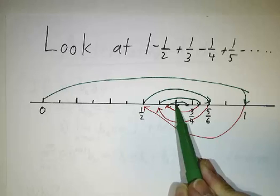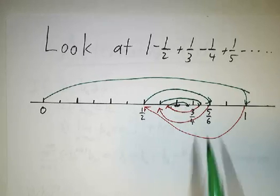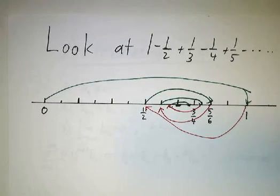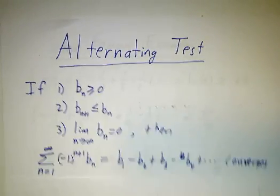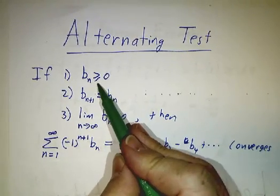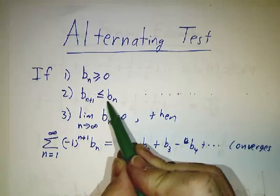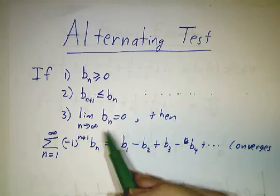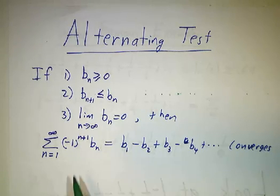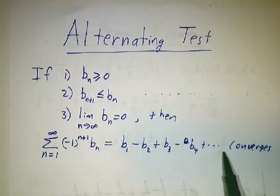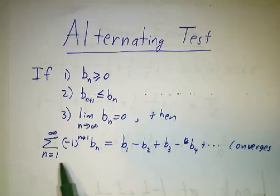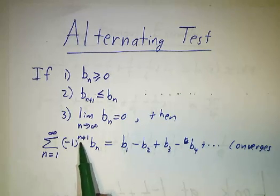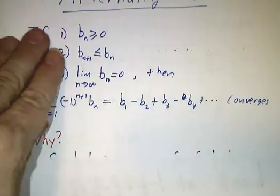They're all going to home in on a certain spot. This happens in general, and here is the alternating series test: if we have a sequence of positive numbers b_n that are getting smaller and smaller — each one less than or equal to the one before — and if they all tend toward 0, then the alternating sum b1 − b2 + b3 − b4 + ... automatically converges. We usually write this using powers of negative 1, since (−1) to an even power is 1 and (−1) to an odd power is −1.